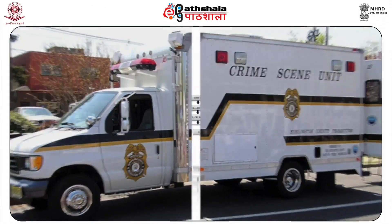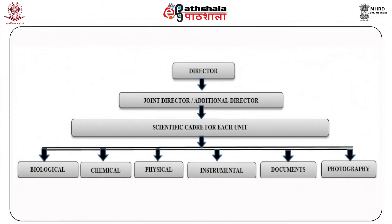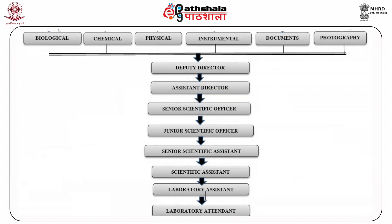All the forensic science labs are headed by a director who has undergone scientific training and has many years of experience. In comparatively bigger labs, the director is assisted by an additional or joint director and an administrative officer. All the divisions are generally headed by deputy directors having research experience of several years in various aspects of forensic science. The head of each division is assisted by an assistant director, senior and junior scientific officers, senior and junior scientific assistants, lab assistants and attendants.